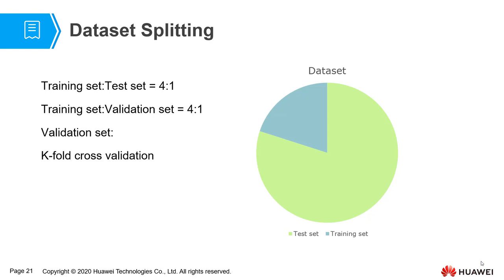If we use the 5-fold cross-validation method, we divide the training set into 5 parts. When the model is trained for the first time, the first part is used as the validation set and the other parts are used as the training sets. For the second training, we use the second part of the data set as the validation set, and use the other parts as the training sets. In this way, we will get 5 models and 5 results, and the average value of the 5 results is used as the final evaluation result of the model. Validation sets are often used to search for some custom parameters.